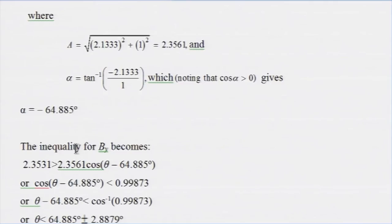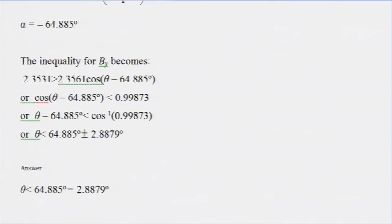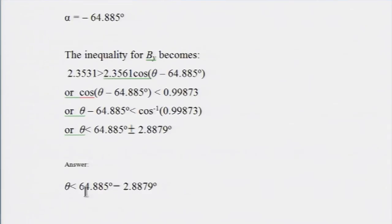Ultimately, we will get a trigonometric equation that gives an inequality for BY. From that we can find theta. The answer will be theta approximately equal to 62 degrees. That is one way of doing it — but would there be another way?